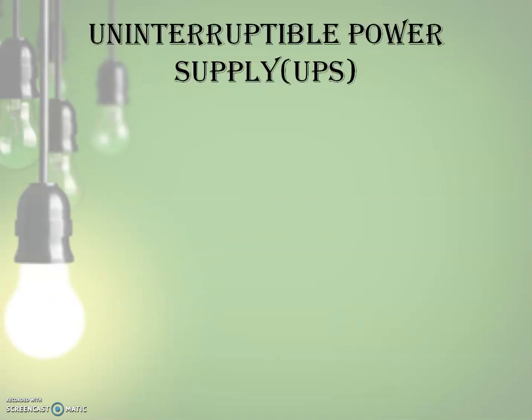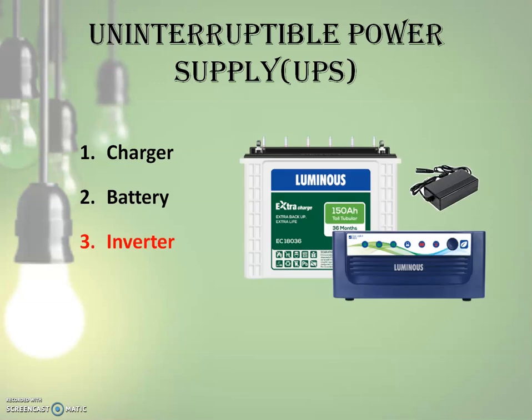An inverter is one of the three components of a UPS system — the Uninterruptible Power Supply system. These three components are a charger, a battery, and an inverter. The assembly of these components provides power backup to appliances, and this assembly is what people generally call an inverter. However, an inverter is only one part of this assembly. In this discussion, I will refer to the whole assembly simply as an inverter.